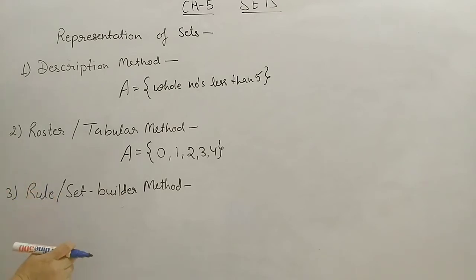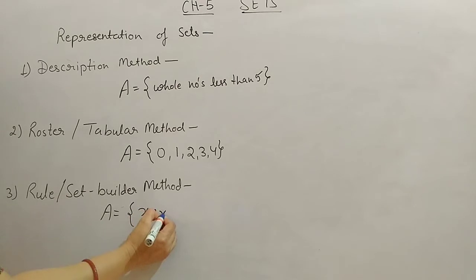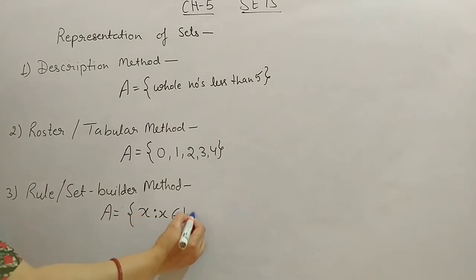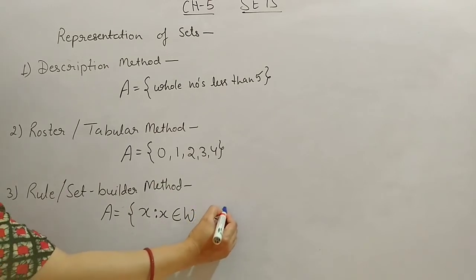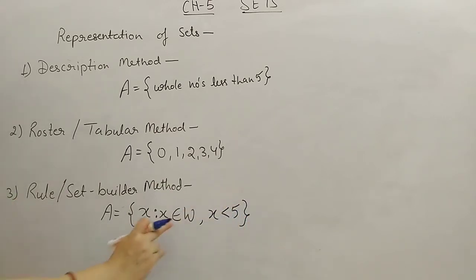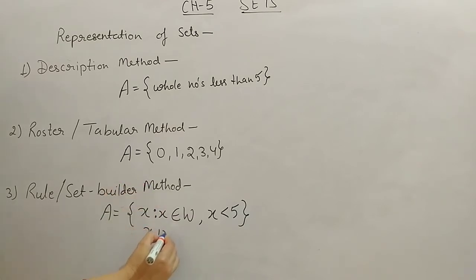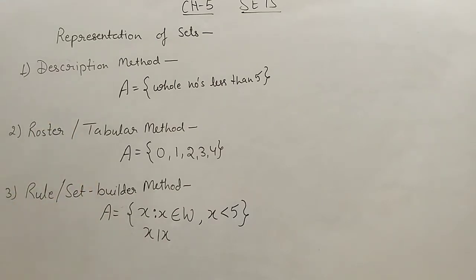The third one is the rule or set builder method. In this method, we represent elements of the set with a variable — we can take any alphabet. We write: X such that X belongs to whole number and X is less than 5. The symbol means 'belongs to'. In some books you may see a vertical bar instead of the colon — both meanings are the same. These are the three main ways to represent a set.